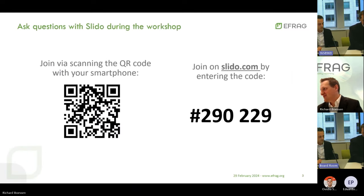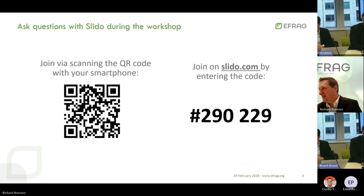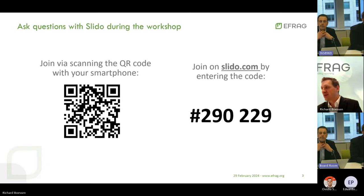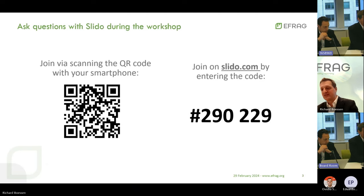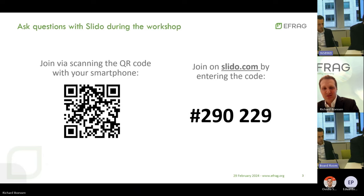We have a tough agenda with a lot of things to show you today. If you have any question, please feel free to ask via Slido — a platform you can access by scanning the QR code with your smartphone or going to Slido.com and entering the code 292.9 shown on the screen. We cannot promise to answer all questions, but we will do our best. There is also a dedicated question section at the end of the workshop.